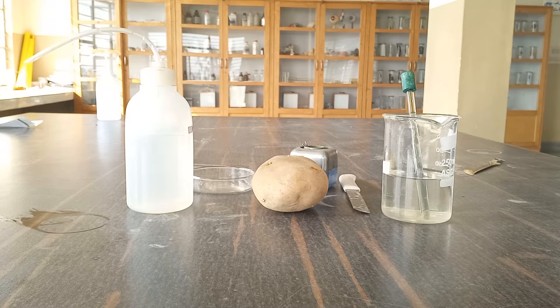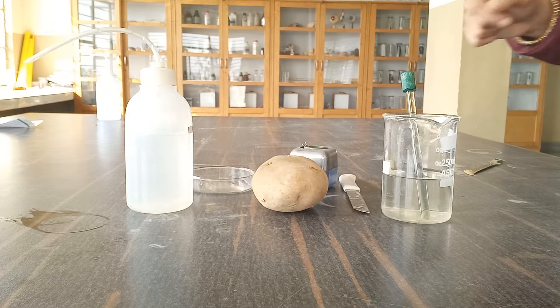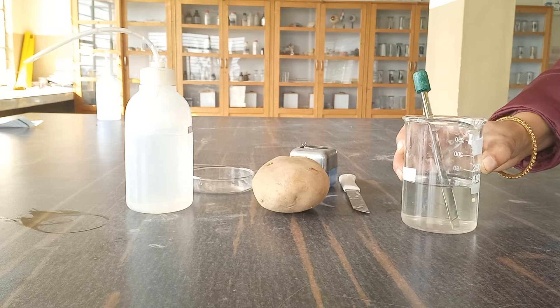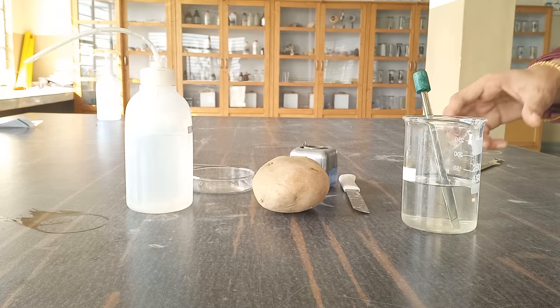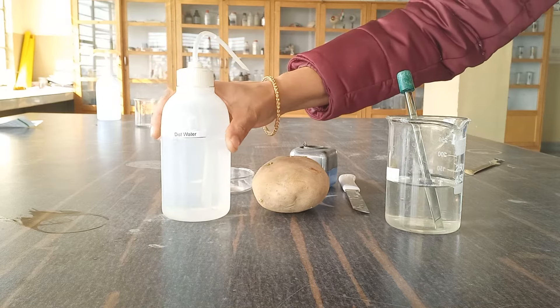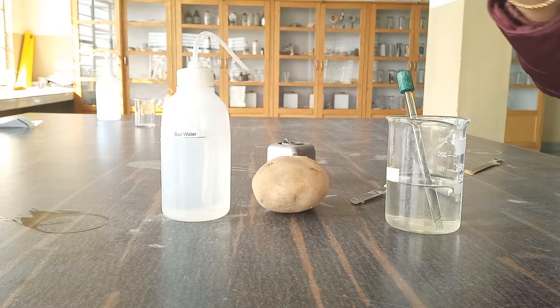So let's start. First of all, the requirements. We need a big size potato, 20% sugar solution - we are going to weigh 20 grams of sugar and dissolve in 100 ml of water. We need distilled water, we need all pins, we need a knife, we need a petri dish. These are the requirements for the experiment.